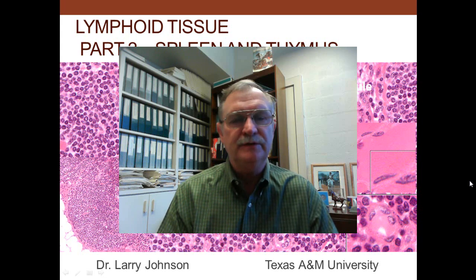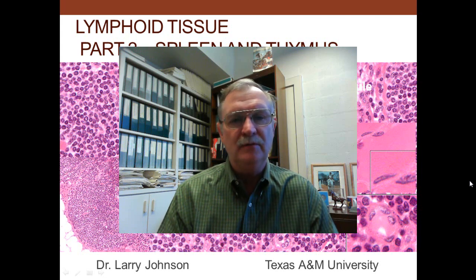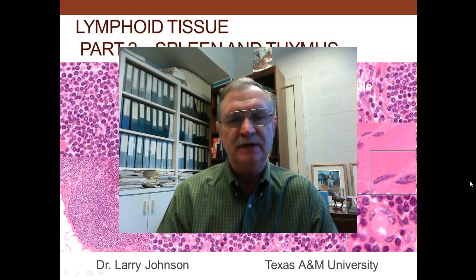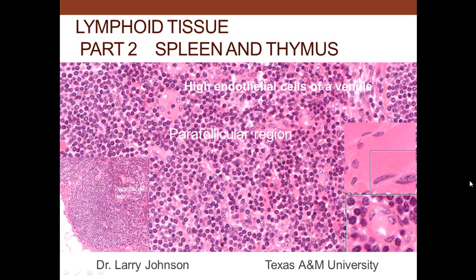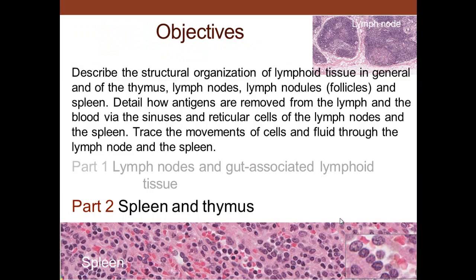Today we're going to talk about lymphoid tissue. We want to look at the general organization, the cells that are there, and fluid flow of blood and lymph fluid. Part one covers lymph nodes and gut-associated lymphoid tissue. Part two covers the spleen and thymus.